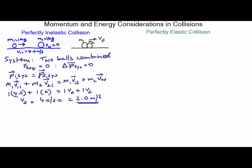And that makes sense. There's double the mass moving, so it's going to be moving at half the speed at which just one of the masses was moving. So for perfectly inelastic collisions, all I need is momentum conservation to solve for the final velocity.